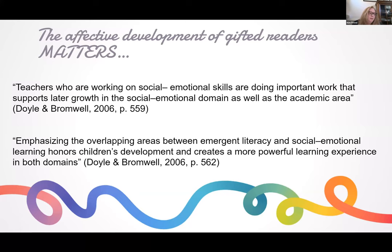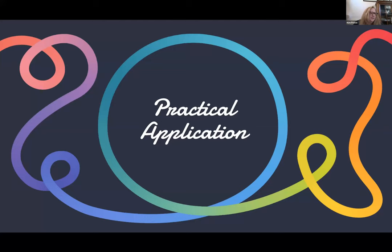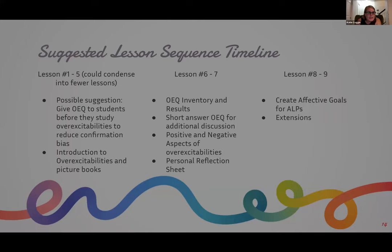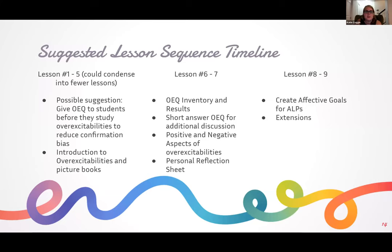By working on affective development, we are also increasing their academic experience as well. Supporting the affective development matters for all students. Now we're going to talk about some practical applications. This is the lesson sequence that I teach when I teach this in the classroom. I work at a K-8 gifted magnet school — around 50% of the kids are gifted right now at the school. This is the lesson timeline that I usually use; I'm going to show this again at the end after I show you my lesson sequence.